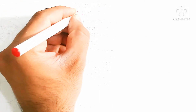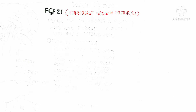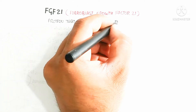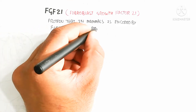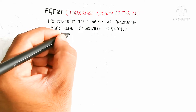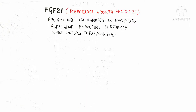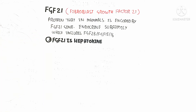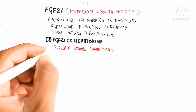In this video we will discuss FGF21, fibroblast growth factor 21. FGF21 is produced during fasting and in response to low sugar levels in the body. The protein in mammals is encoded by the FGF21 gene, an endocrine subfamily which includes FGF23, FGF15, and FGF16. FGF21 is a hepatokine, meaning it is released from the liver — from hepatocytes.